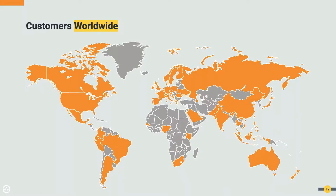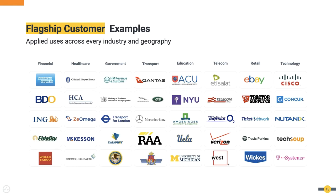WSO2 has customers in every inhabited continent, expanding with new logos each quarter, covering countries where they previously had no presence. A major part of the business is international, with a strong presence in Europe and North America and steady growth in other regions. Flagship customer examples span multiple industry verticals — for instance, every eBay transaction passes through hundreds of WSO2 Enterprise Integrator instances, meaning many users are indirectly using WSO2 products when doing business with these customers.